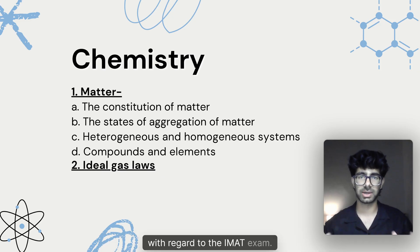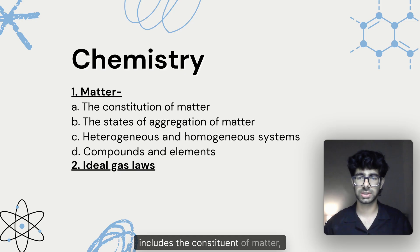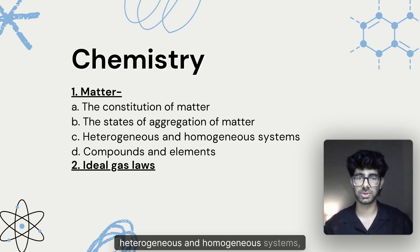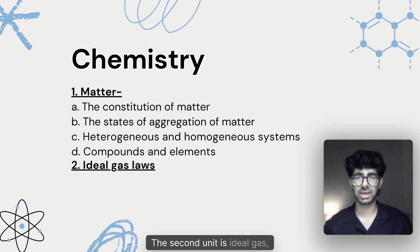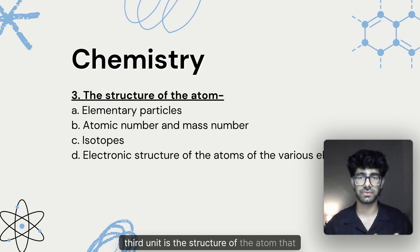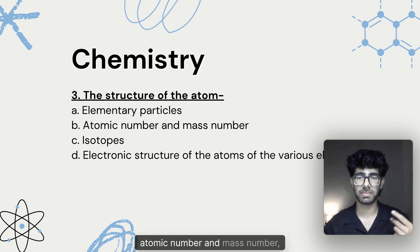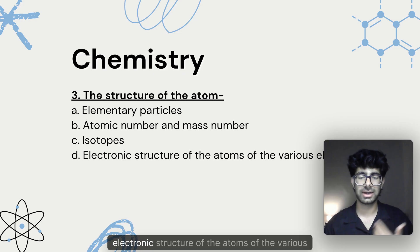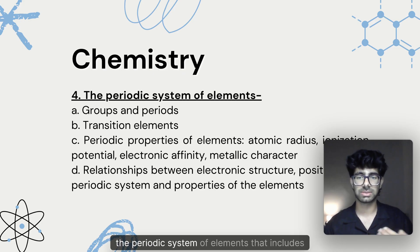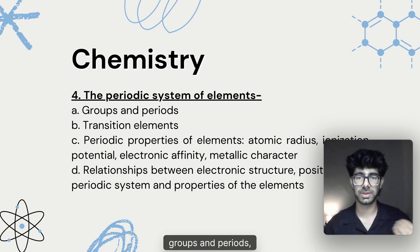Coming back to the matter of this video — chemistry is also another very important subject for the IMAT. In chemistry, we have the unit of matter, which includes the constituents of matter, the states of aggregation of matter, heterogeneous and homogeneous systems, compounds and elements. The second unit is ideal gas. The third unit is the structure of the atom, which includes elementary particles, atomic number and mass number, isotopes, and the electronic structure of atoms of various elements.